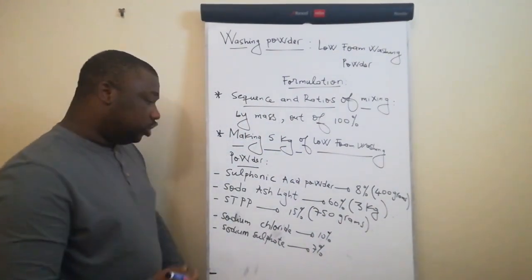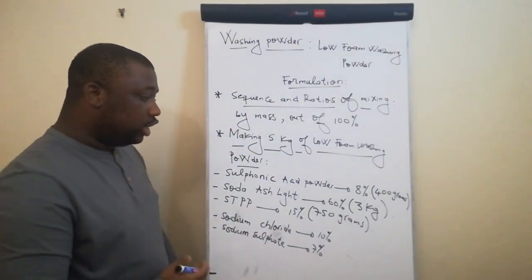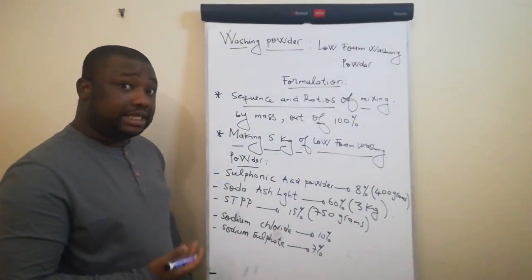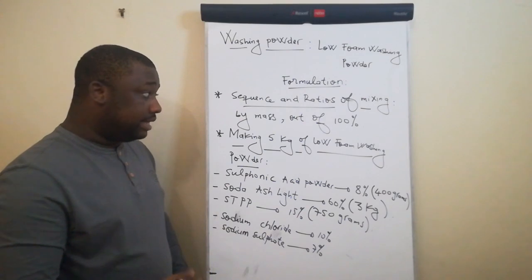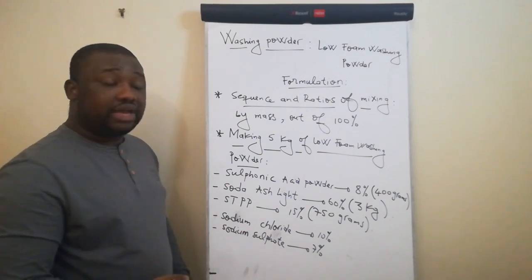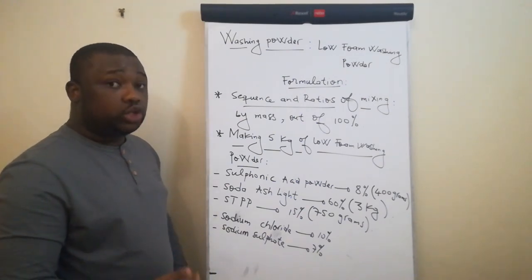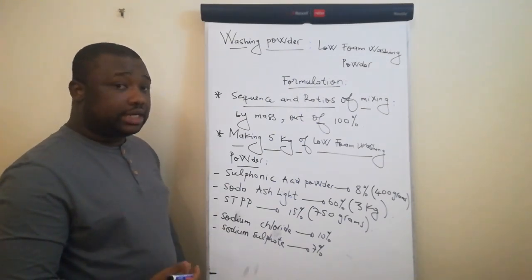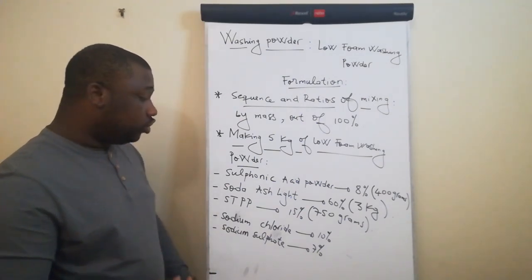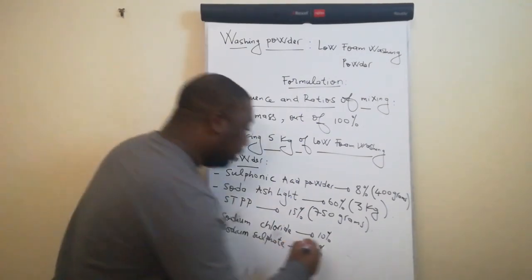Sodium chloride should be 10% of the total mass. Out of the 5 kg, this will be 500 grams of sodium chloride.